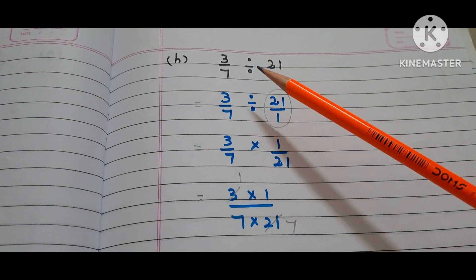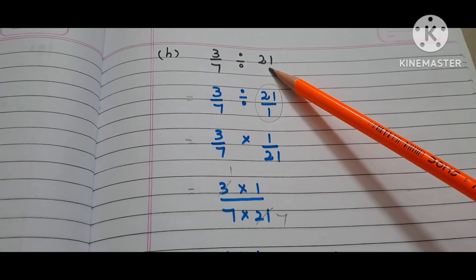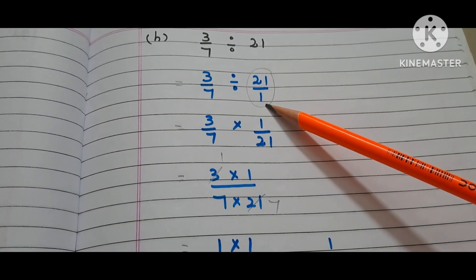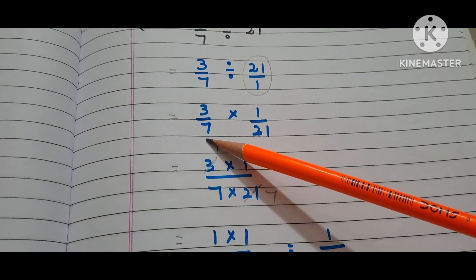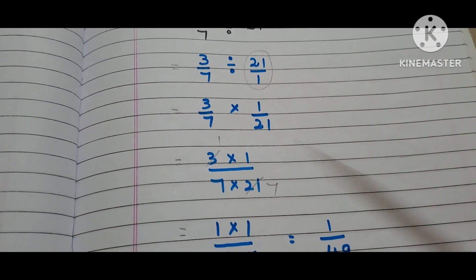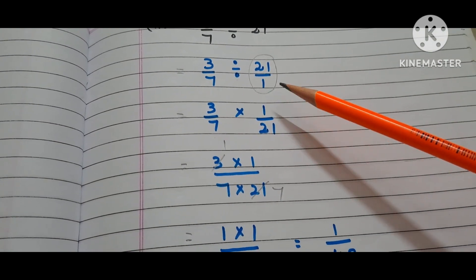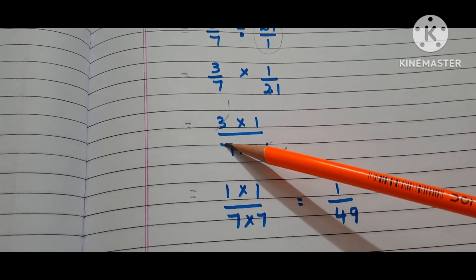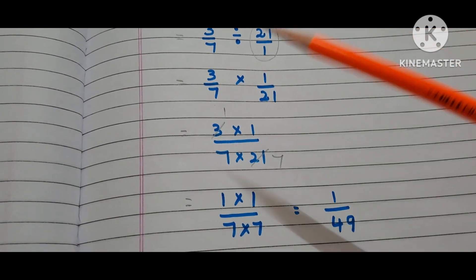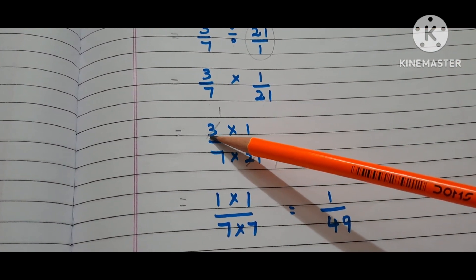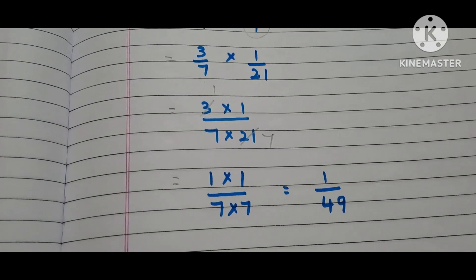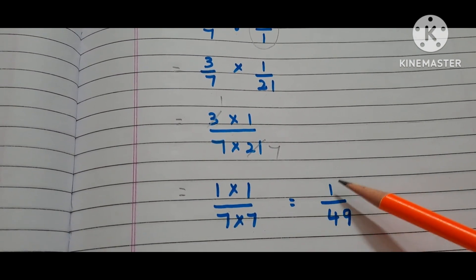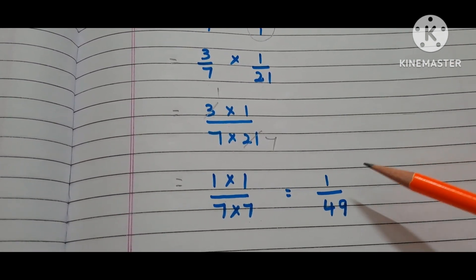Now let us go to the H bit. The question is 3/7 divided by 21. 21 is nothing but 21/1. Copy down the first fraction 3/7. Write the multiplication symbol instead of the division symbol and take the reciprocal of 21/1, that is 1/21. We have 3 times 1 by 7 times 21. Here we can reduce 3 and 21: 3 ones are 3, 3 sevens are 21. Now we have 1 times 1 by 7 times 7, that is 1/49. The answer is 1/49.